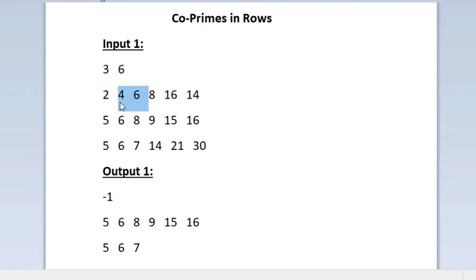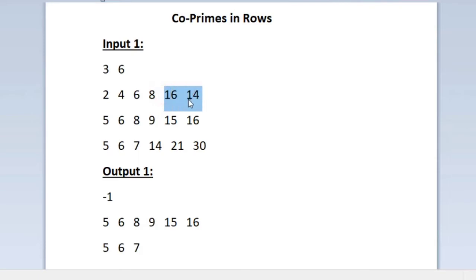The next pair is 4 and 6. Both can be divided by 2, so their HCF is not 1 — not co-prime. The next pair is 6 and 8, again divisible by 2, not co-prime. Then 8 and 16 have an HCF of 8 itself, not co-prime. Finally, 16 and 14 can also be divided by 2, so they are not co-prime. In the first row, none of the integers are co-prime.